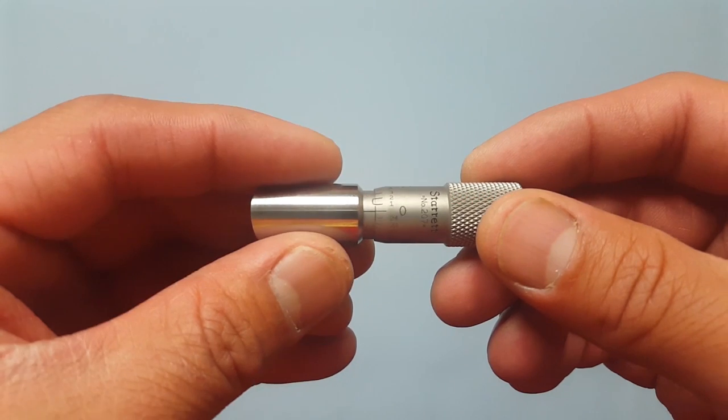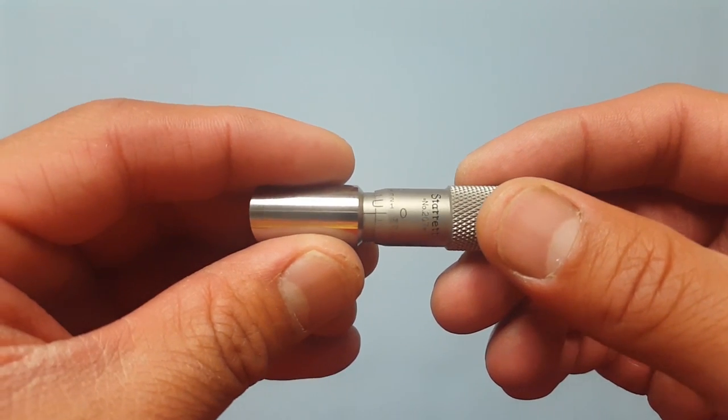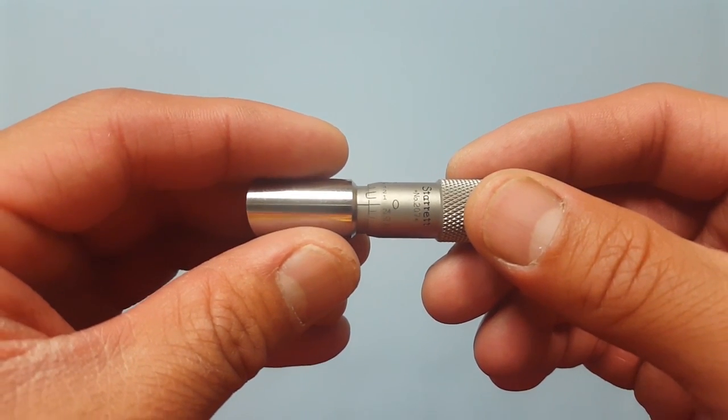This is your can seam micrometer. You'll use it to measure your first operation seam thickness and your second operation seam thickness.